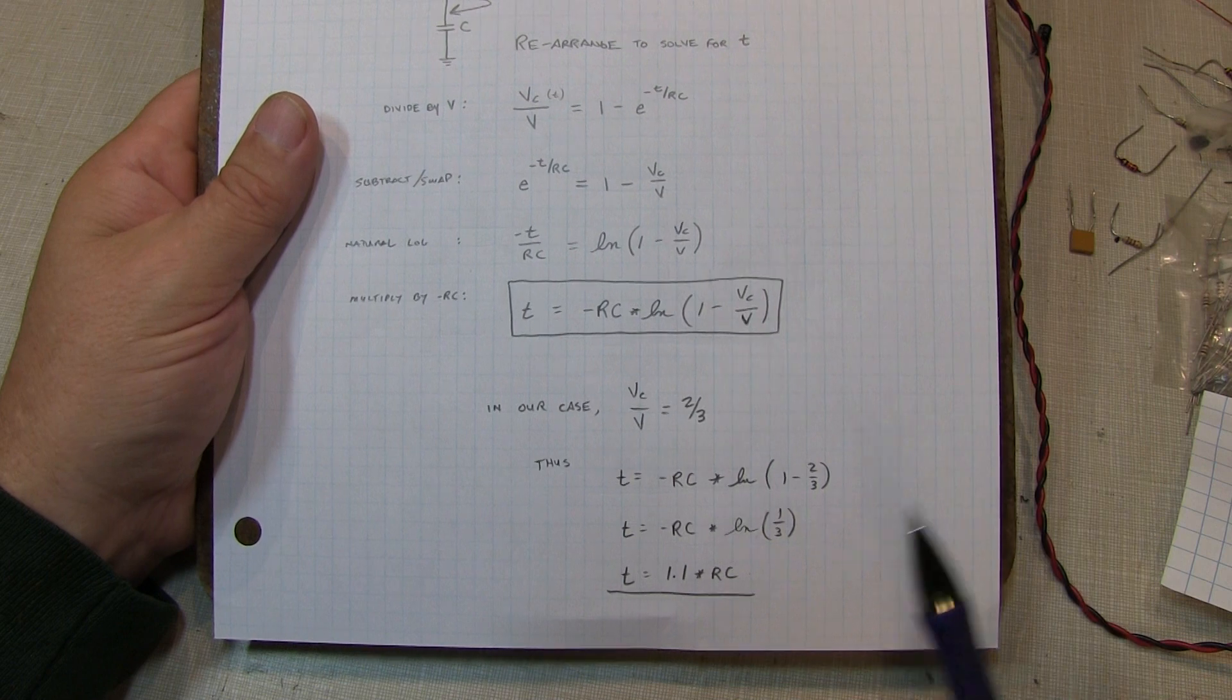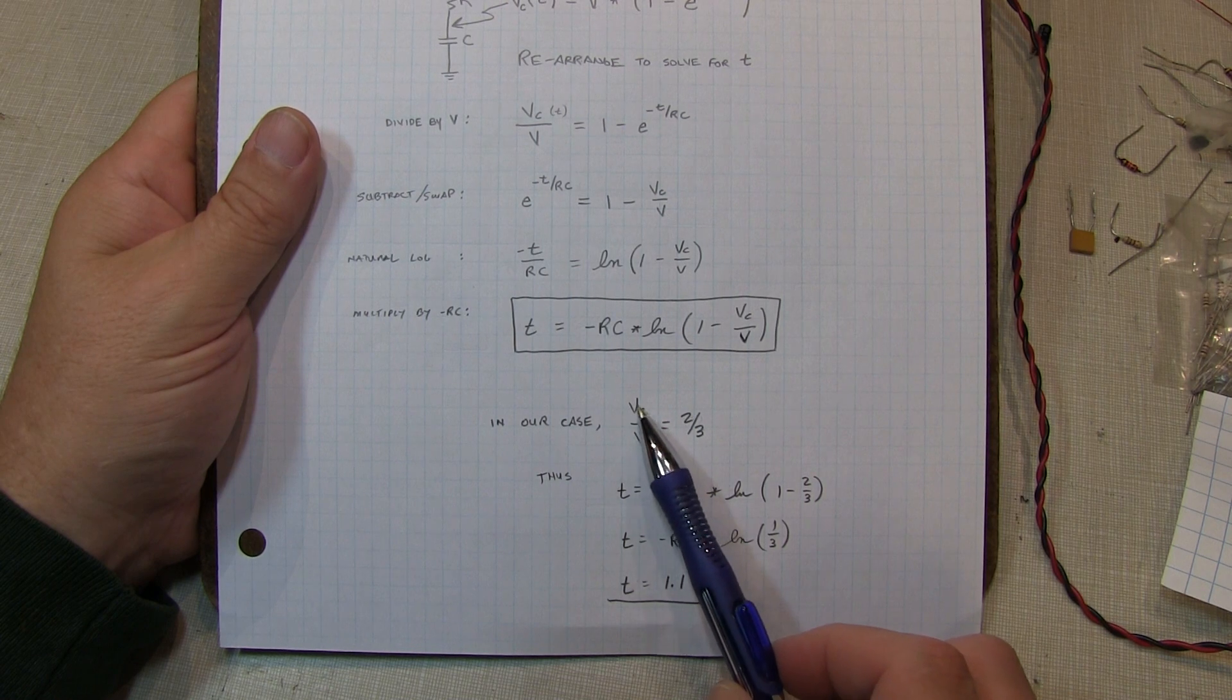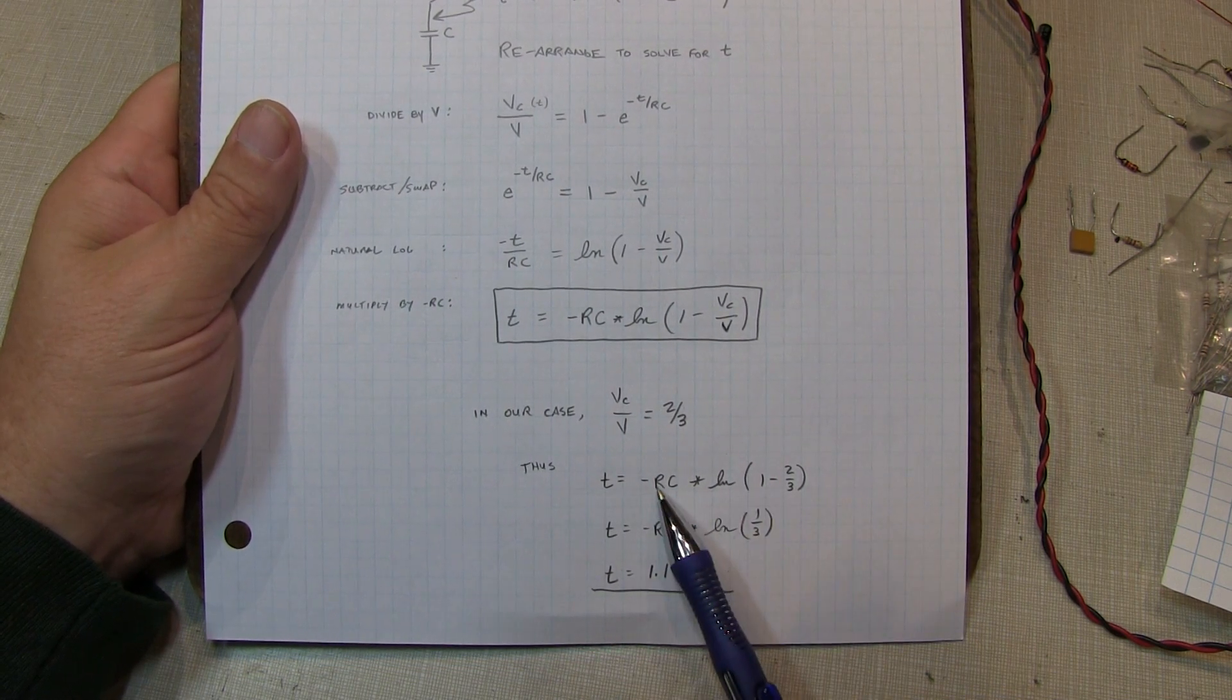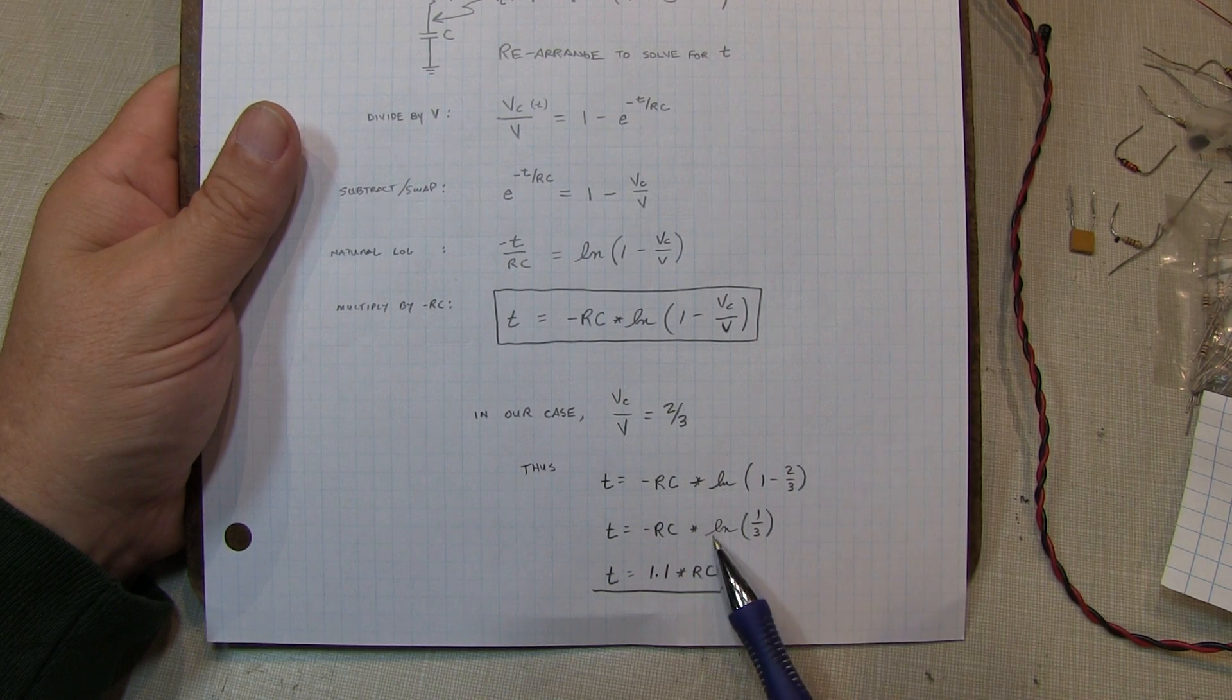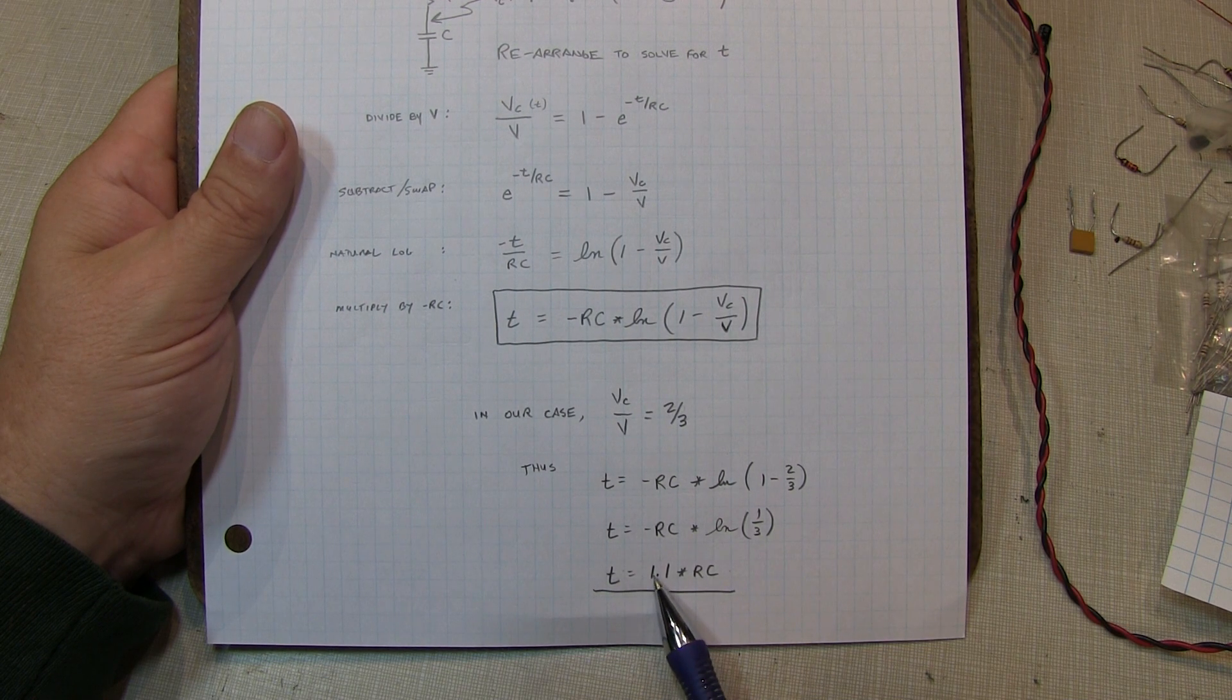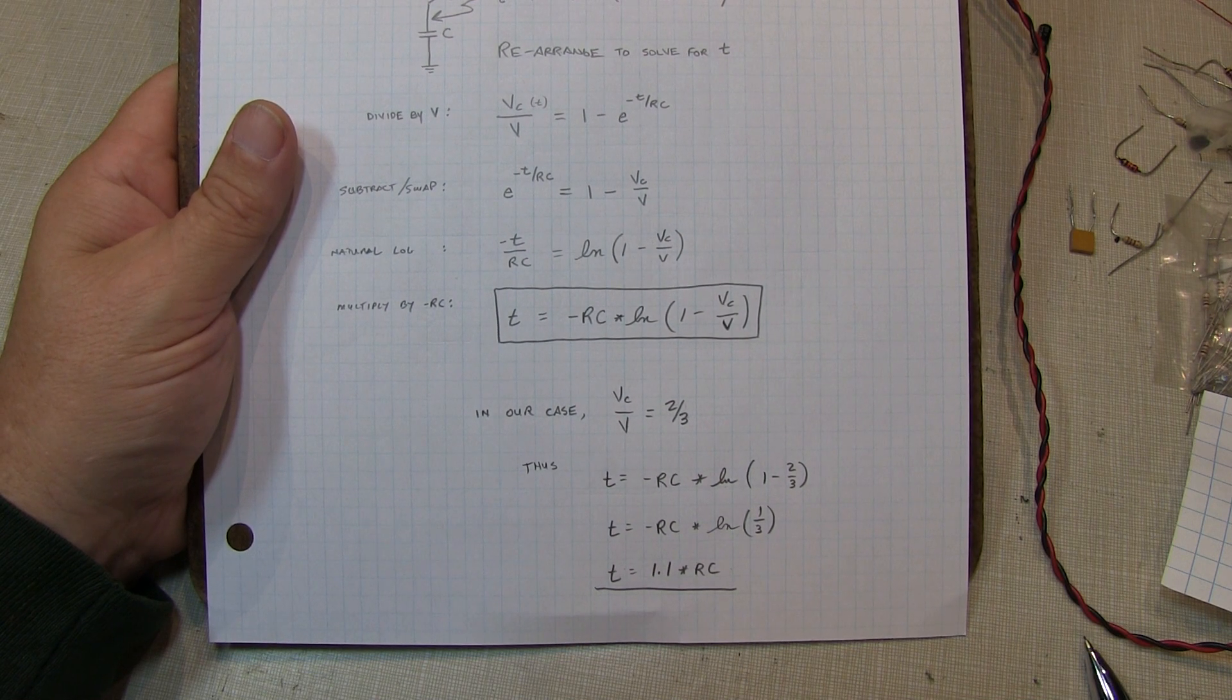Now in our case, with the 555 timer, we know that we're going to be charging up to 2/3 VCC. So VC, or the capacitor voltage divided by the applied voltage, is equal to 2/3. We plug that into the equation here. We have minus RC times the natural log of 1 minus 2/3, which is the same thing as the natural log of 1/3. And if you plug that into your calculator, you'll find that T is equal to, it's like 1.098, but we round it to 1.1 times RC. So that's where that came from.